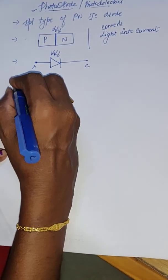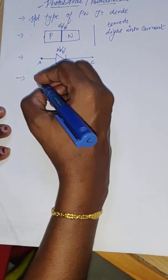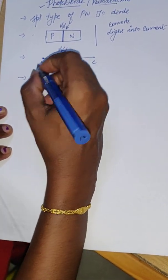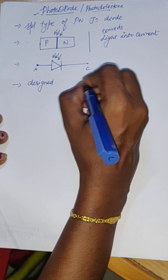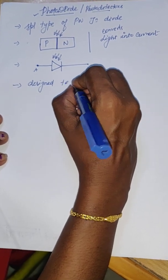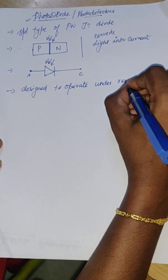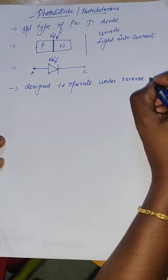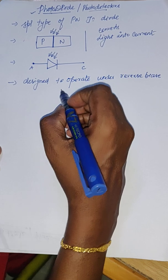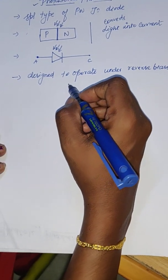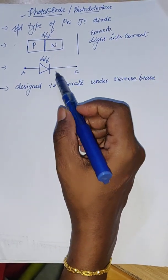Even a solar cell is also branded as a photo detector. The very important point is that photo diodes are designed to work under reverse bias — they are designed to operate under reverse bias. Normally, PN junction diodes will not work in the reverse bias condition. For photo diodes and photo detectors, the additional thing is that we allow light to strike the junction.